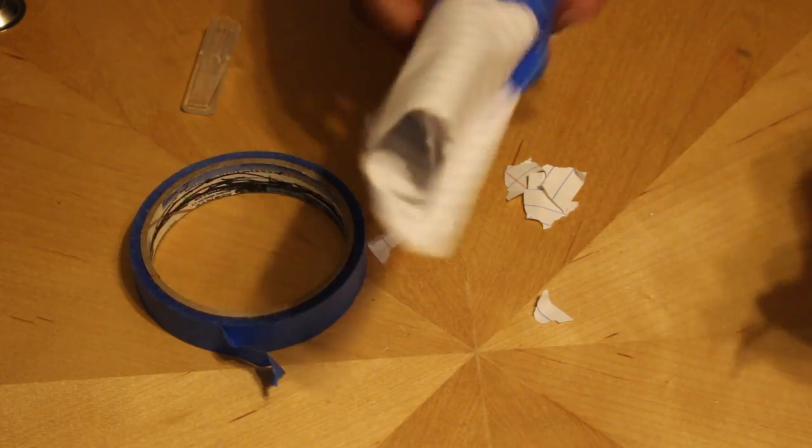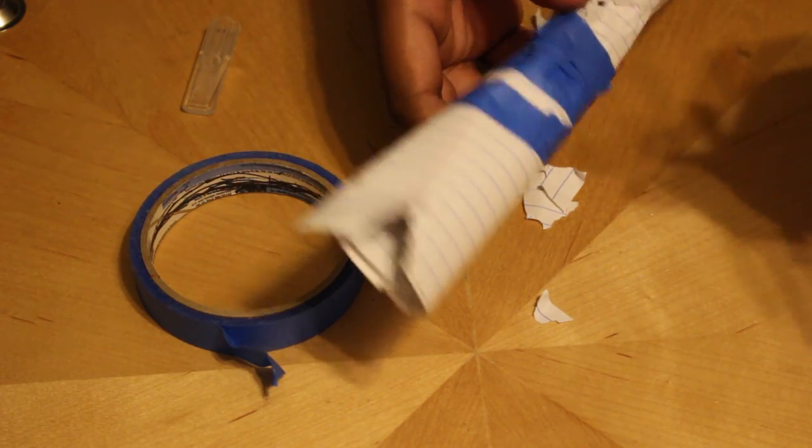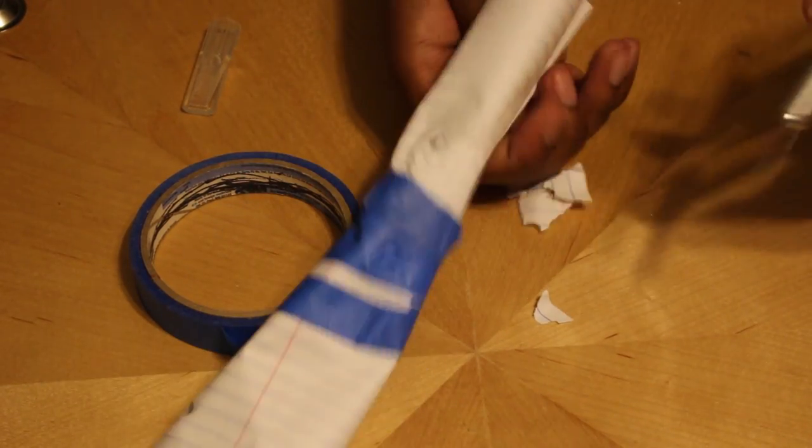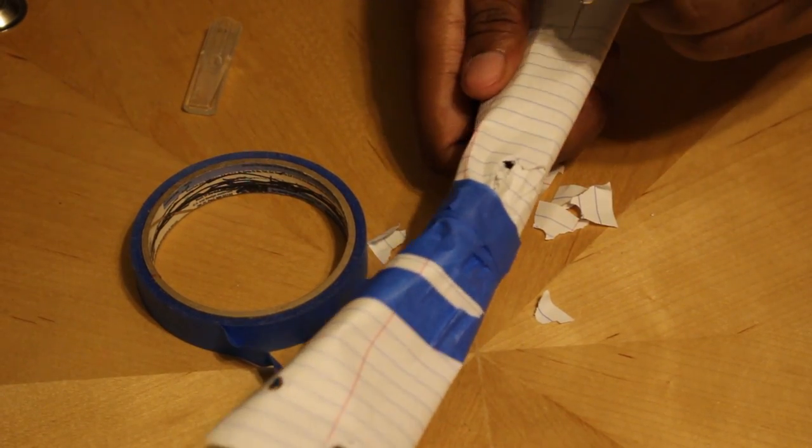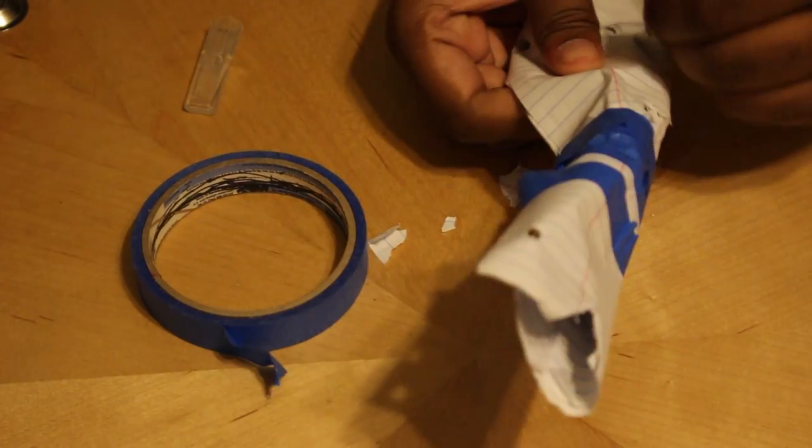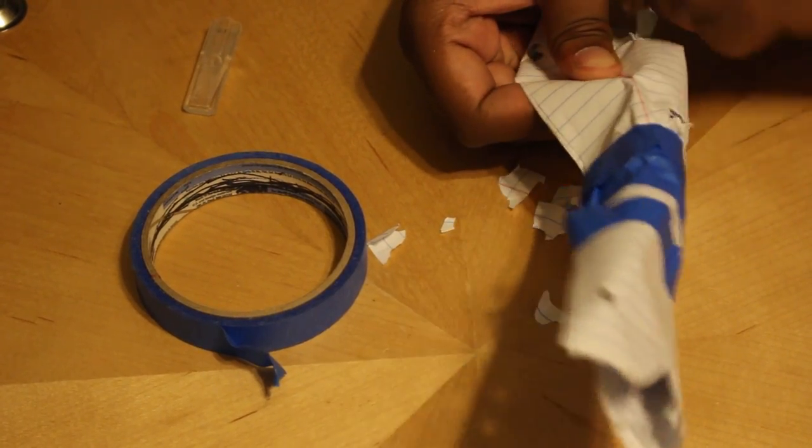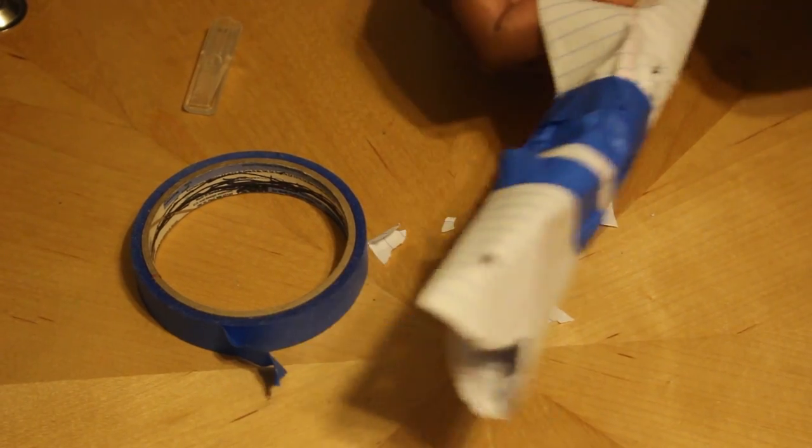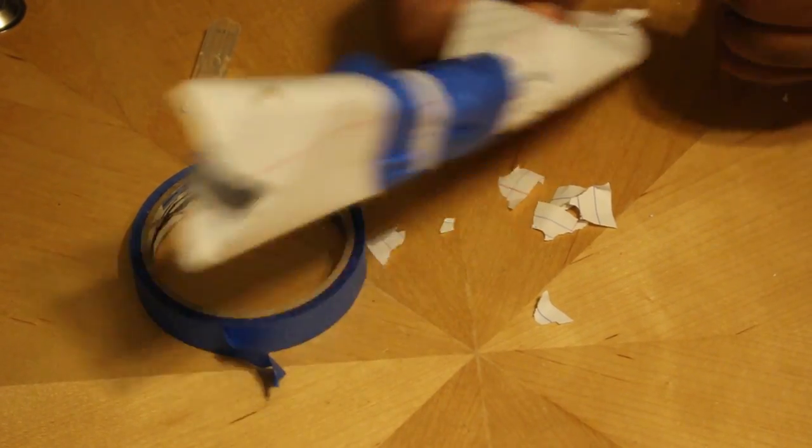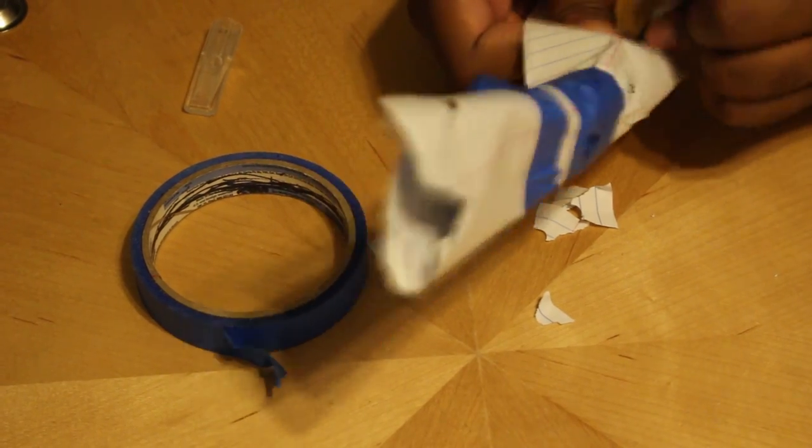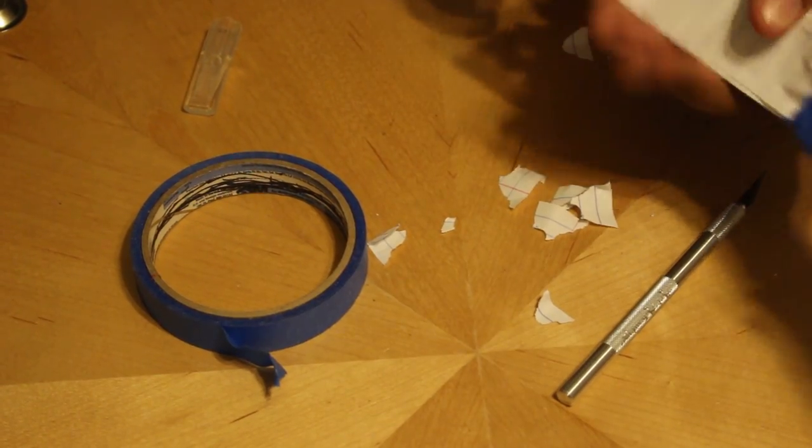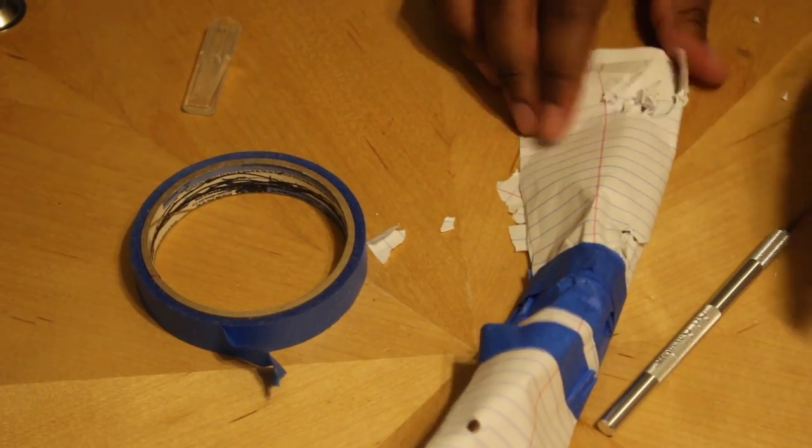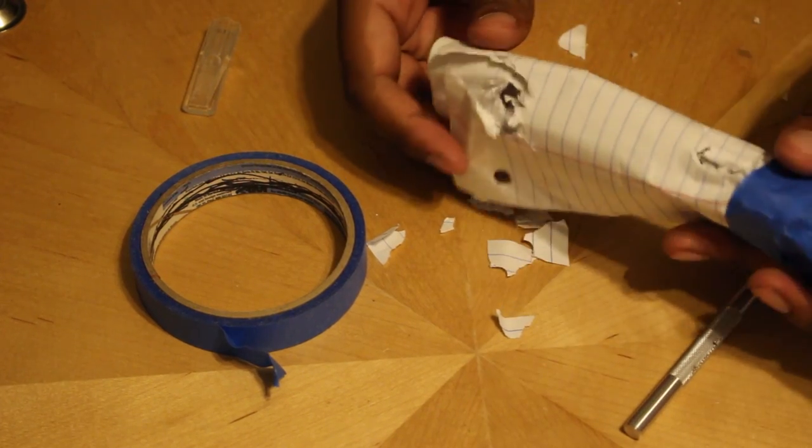Now, get your X-Acto knife. Go for the bottom hole. Okay. See? The bottom hole is not lined up. Doesn't matter. Go ahead and just dig another hole. Look at that. Look at how that looks. It's a beautiful hole.